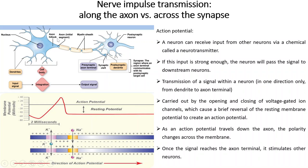The transmission of the signal within a neuron occurs in one direction only: it is received by the dendrites, carried along the axon from the cell body to the axon terminal. This is mainly carried out by the opening and closing of voltage-gated ion channels, which cause a reversal of the resting membrane potential to create an action potential. As the action potential travels along the axon, the polarity changes across the membrane.